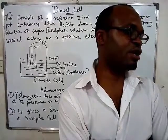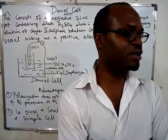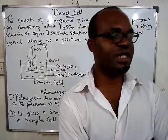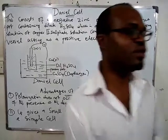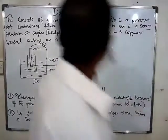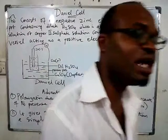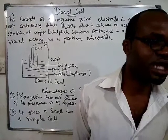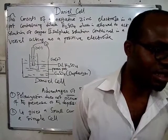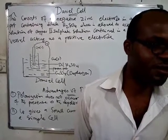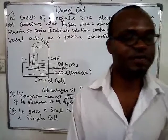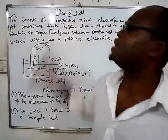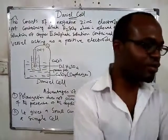The ones that cannot be recharged are primary cells. Examples of primary cells are the simple voltaic cell, which we covered yesterday, the Daniel cell, and the Leclanché cell. Today we are going to look at the Daniel cell, after which we look at the Leclanché cell. All these are primary cells — they cannot be recharged. Once they are exhausted, they are gone.